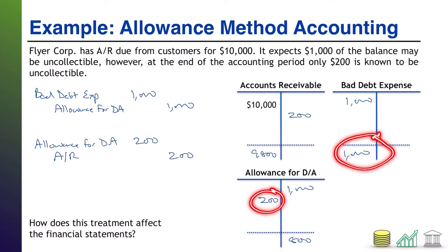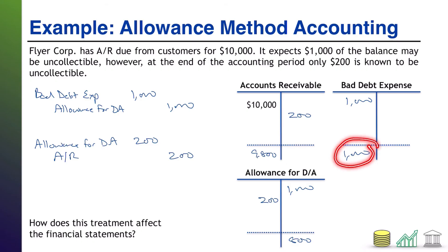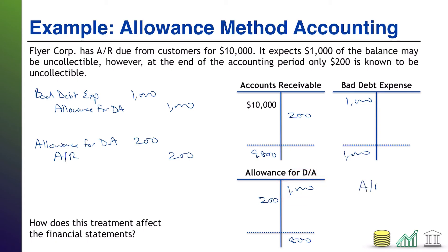However, we've written an expense of $1,000 on our income statement in order to establish this allowance. Look at what our balance sheet is going to show: in the asset section, AR $9,800, and then beneath that, less allowance for doubtful accounts $800.